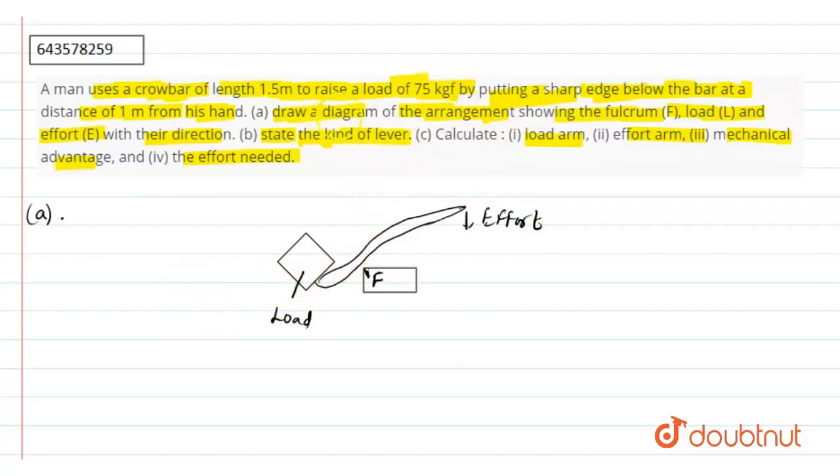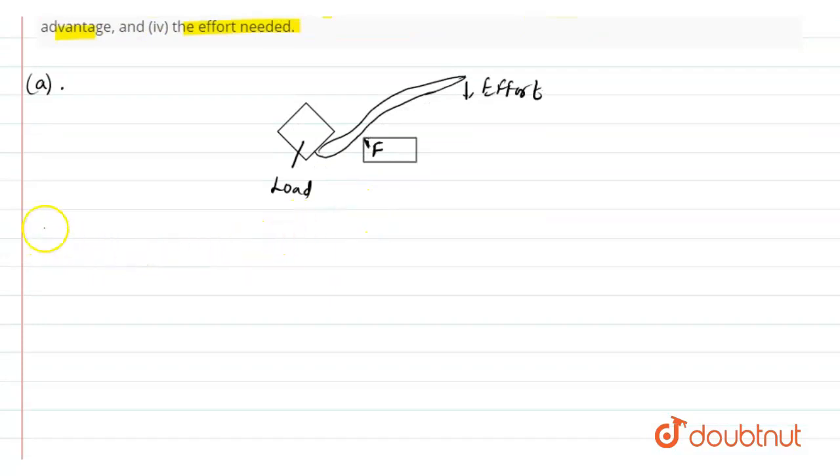Now, in second part we have to state the kind of lever. According to this we can see in the diagram the fulcrum lies between the load and the effort. So it is a class 1 lever.